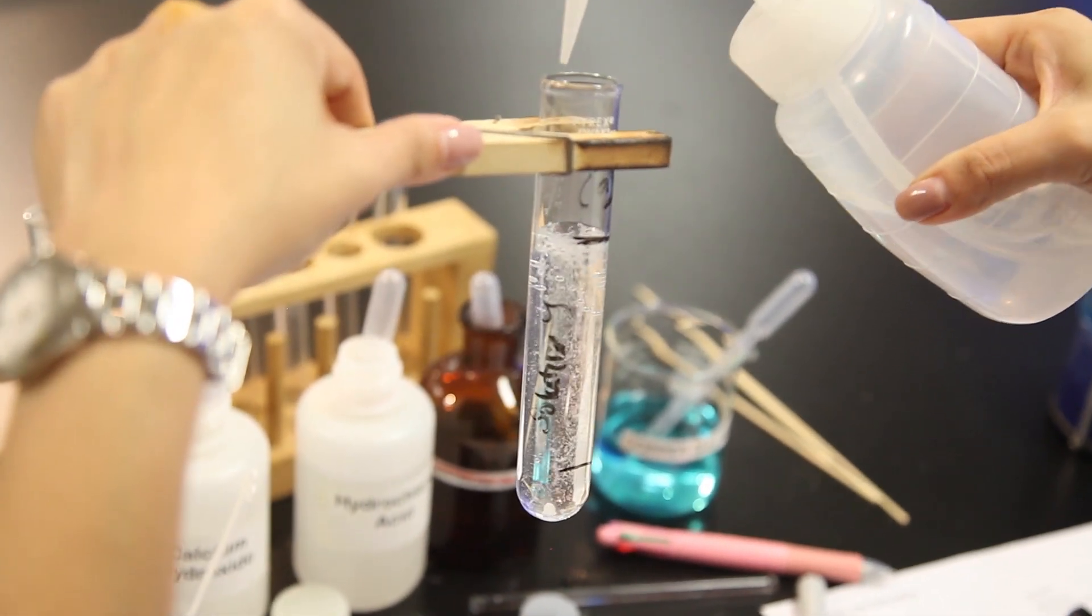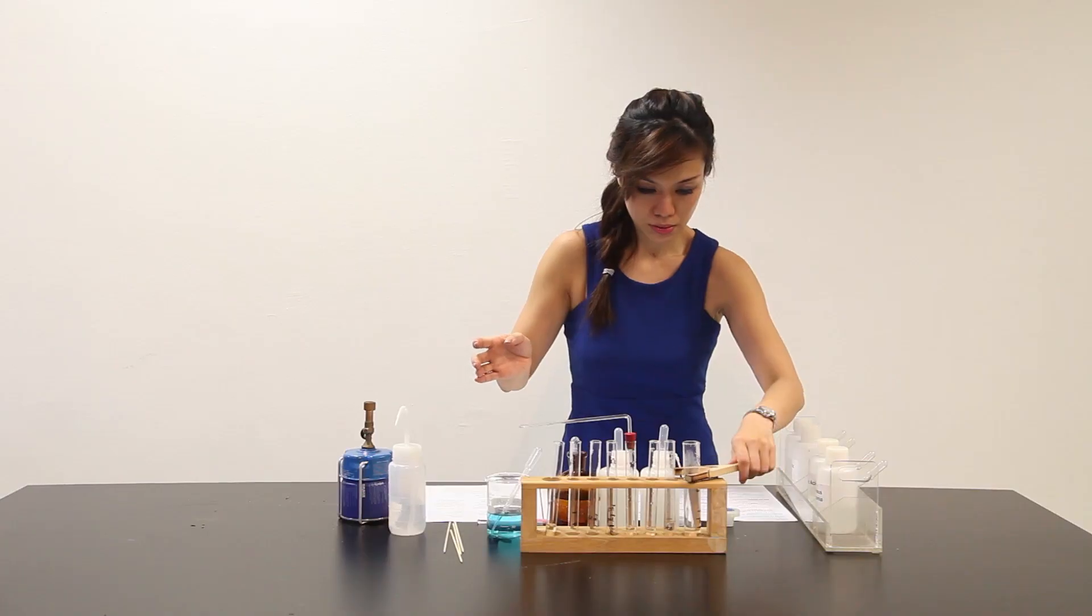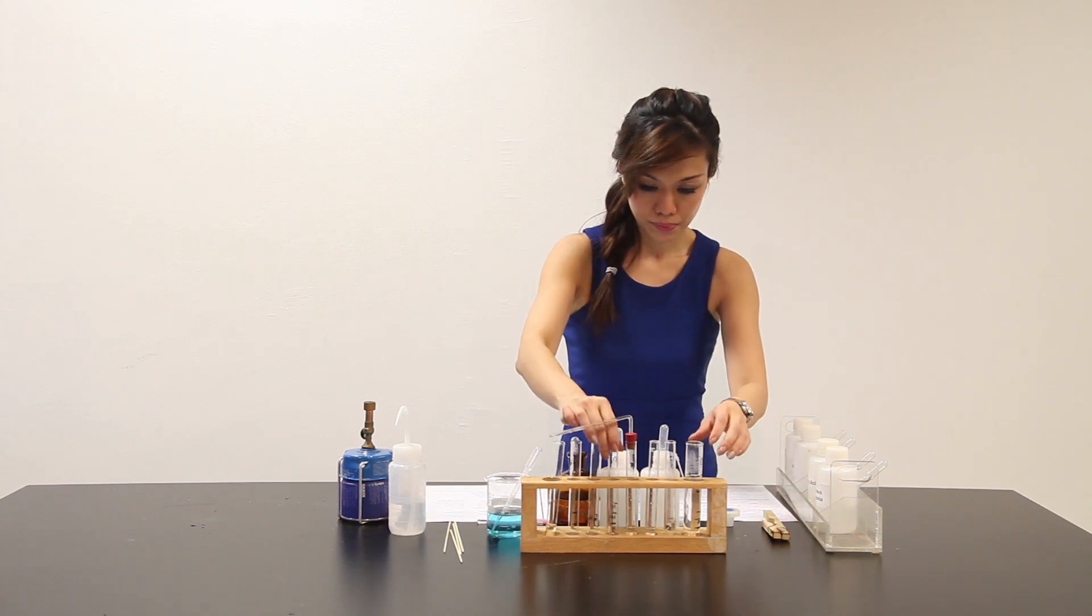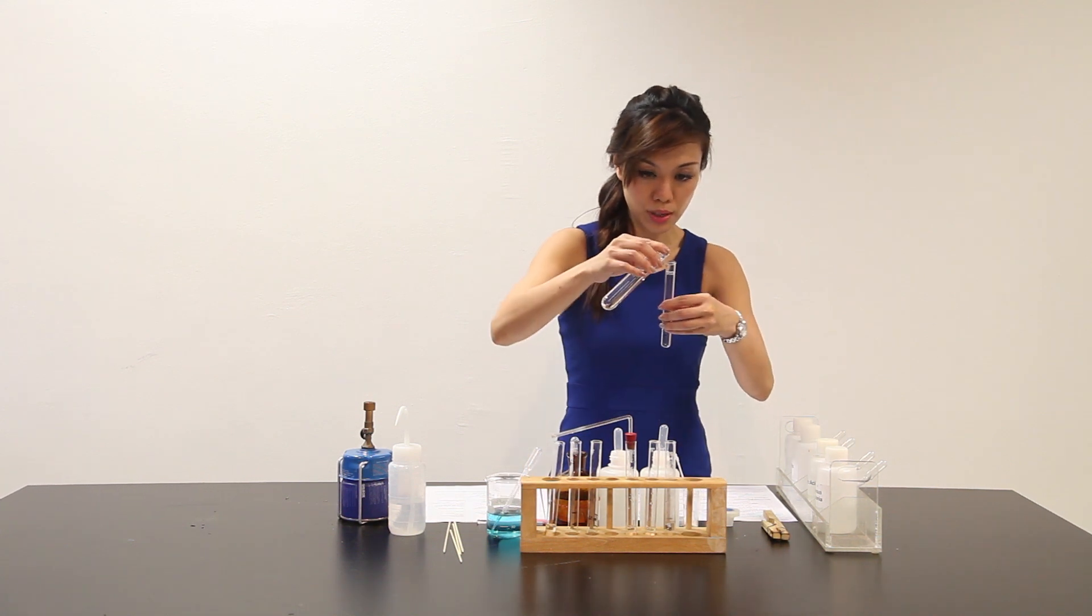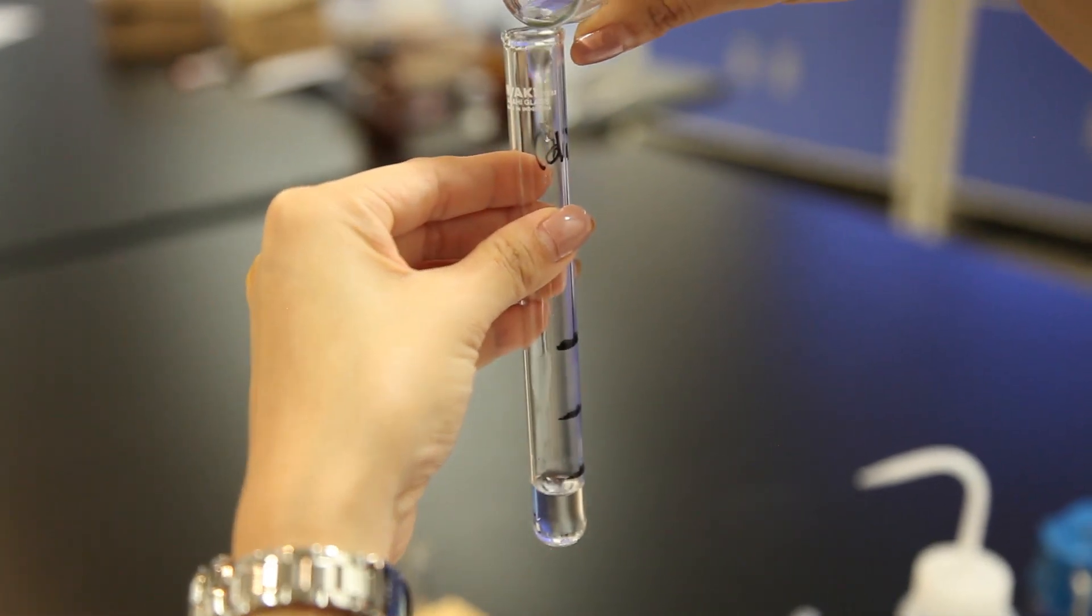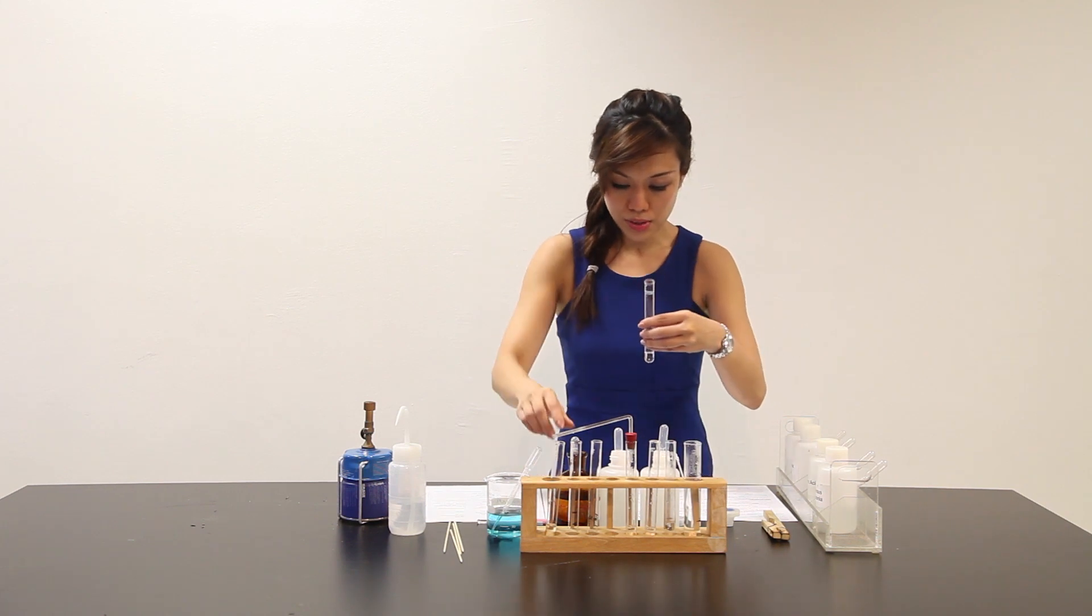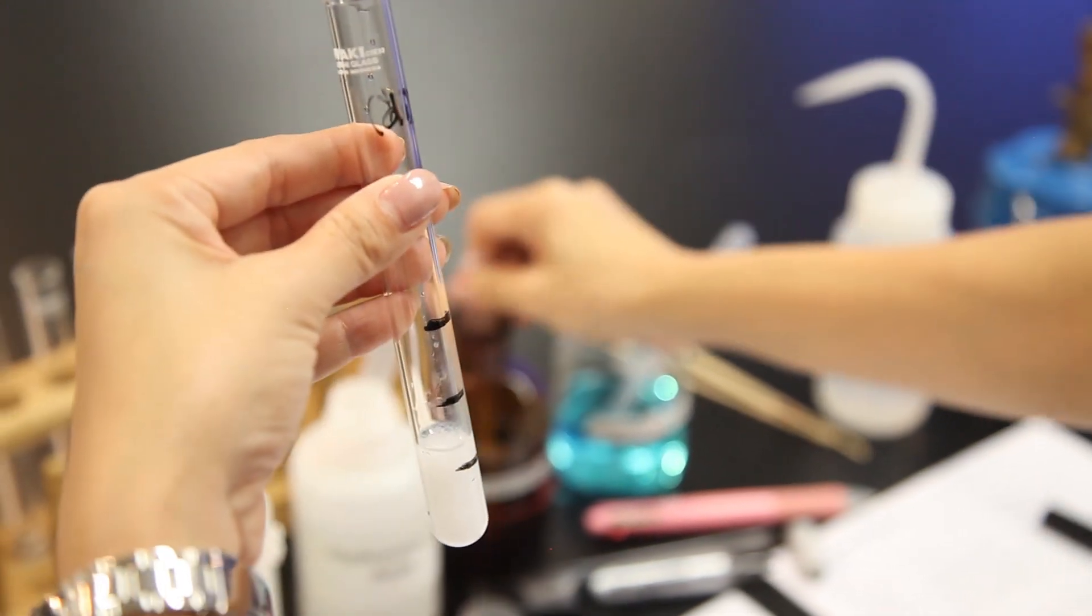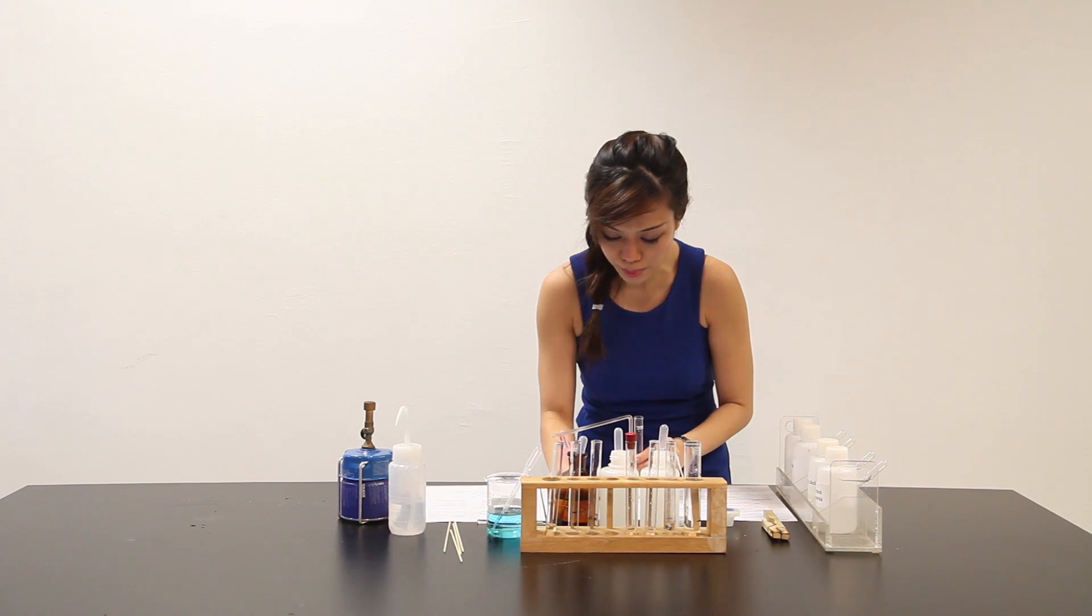Add more of the distilled water until the test tube is about 3 quarter full. I'm supposed to add about 2 cm3 of barium chloride solution. Upon adding 2 cm3 of barium chloride, white PPT is observed.